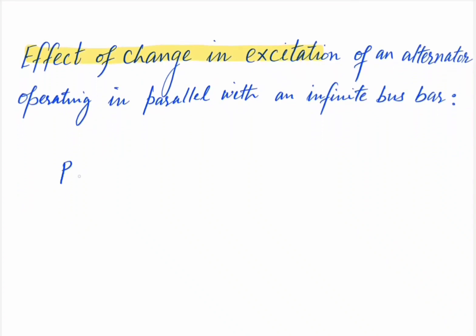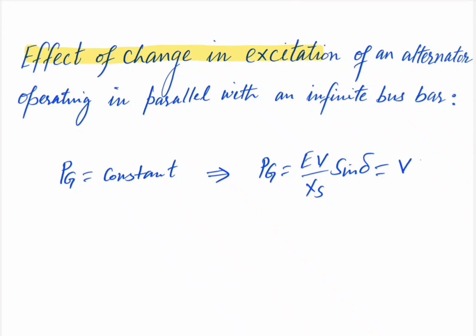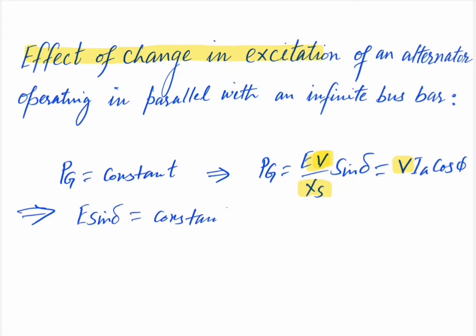Once Pg is fixed — that is, made constant by keeping the governor set point at a desired value — for an alternator connected to an infinite bus bar, terminal voltage V is fixed and Xs is constant. So we may write E·sinδ = constant, as well as Ia·cosφ = constant.